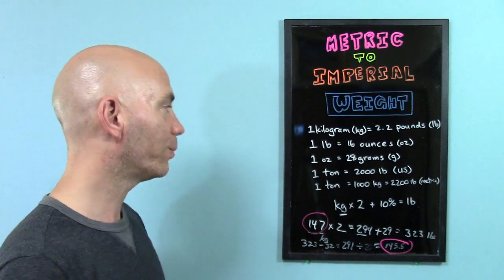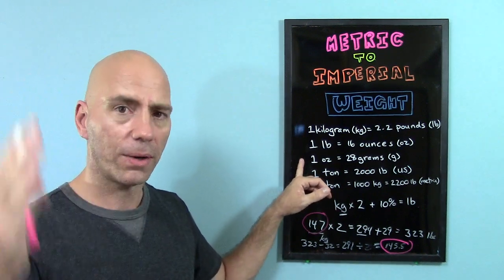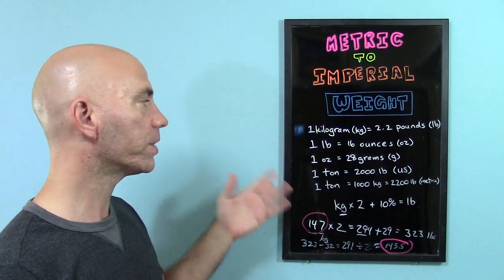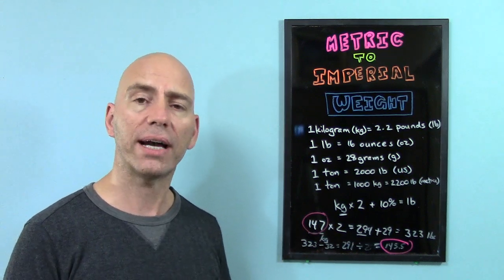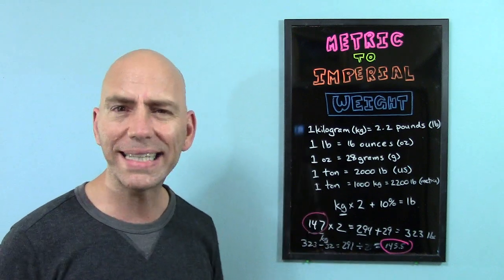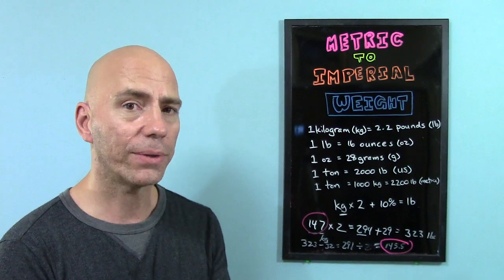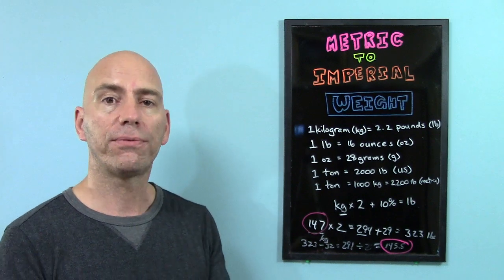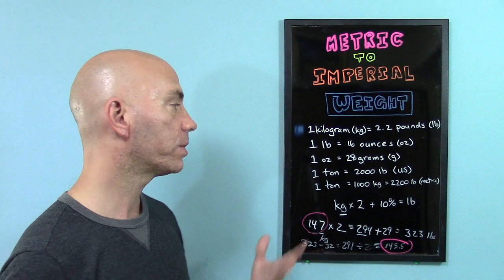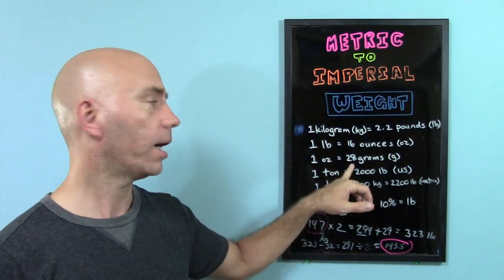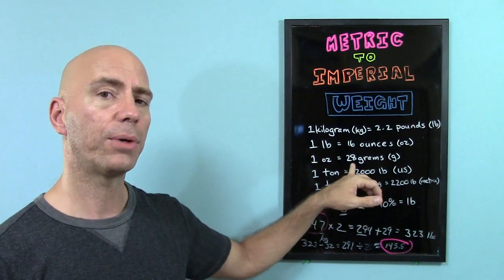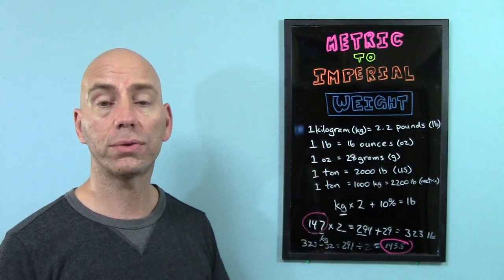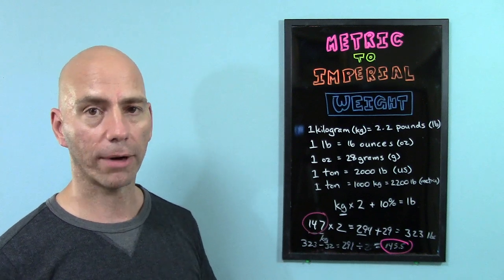So an easier way to do this would be if we think about 1 ounce as 30 grams. That's good enough. Good enough for me, anyway. So if you say, how many grams are there in 5 ounces? 5 times 30, that's an easy calculation—150. It's not accurate, it's not exact, but it's usually good enough for most things. So remember, if 28 grams, if you can remember that, great, but it might be easier to remember 30 grams, and it would also be easier to do calculations if you remember 30 grams per ounce.